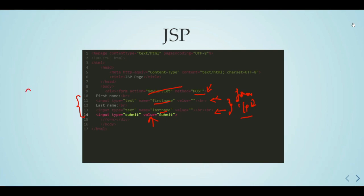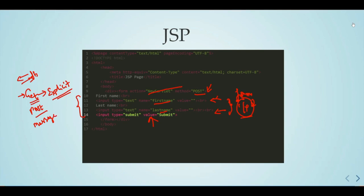There are two types — we have already discussed it. There are two types: GET and POST. If you have the GET action, if you want to get explicitly, it will get the URL. If you have the POST, it will get the parameters embedded in the form. So, this is the JSP file explanation.